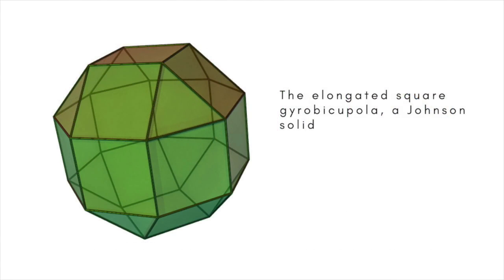There are also infinite families of prisms and antiprisms which, like the Archimedean solids, are considered to be semi-regular if all their faces are regular polygons. In total, there are 92 convex polyhedrons with regular polygonal faces and not necessarily equivalent vertices. These are the Johnson solids.